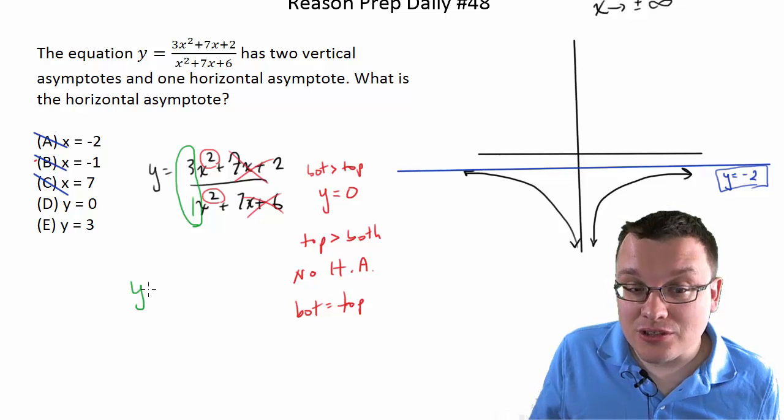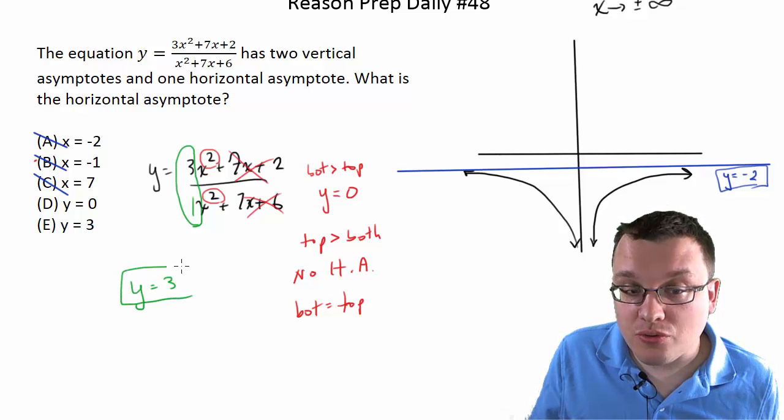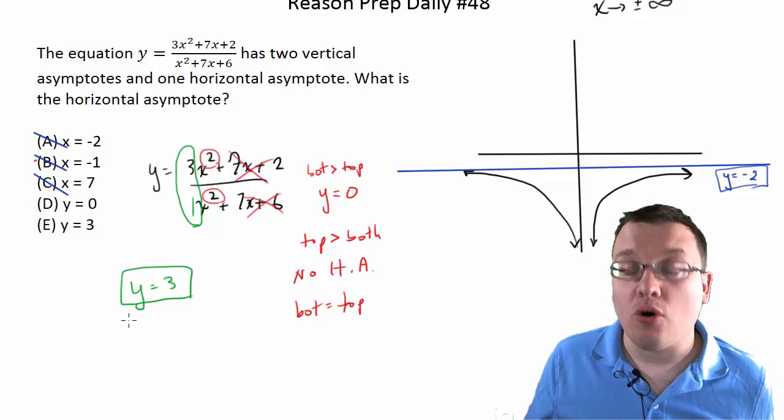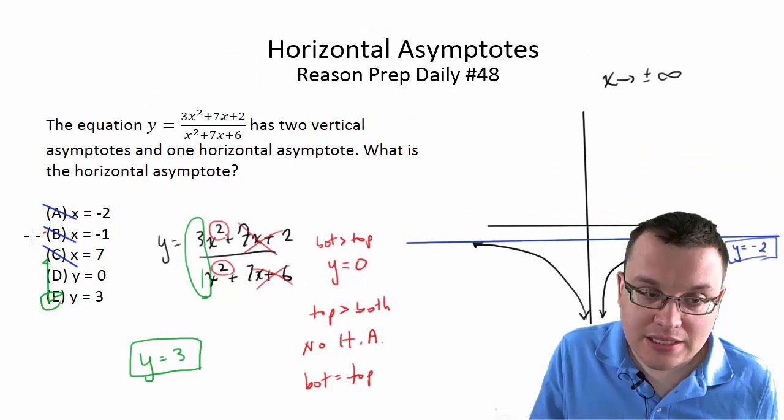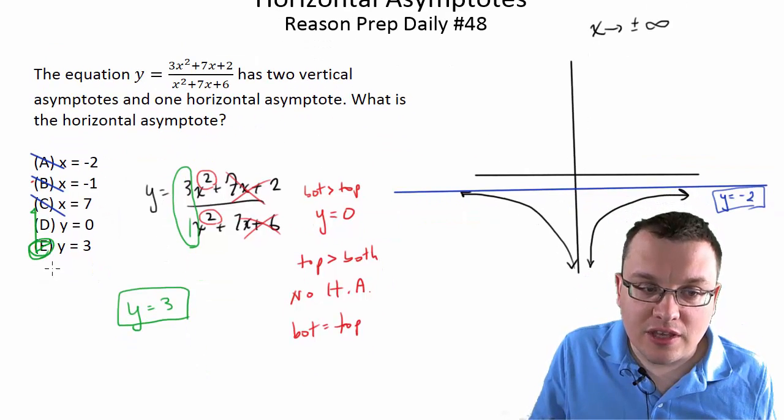3. And that tells you that y equals 3 would be the horizontal asymptote for that particular equation. So in this case, e would be the answer.